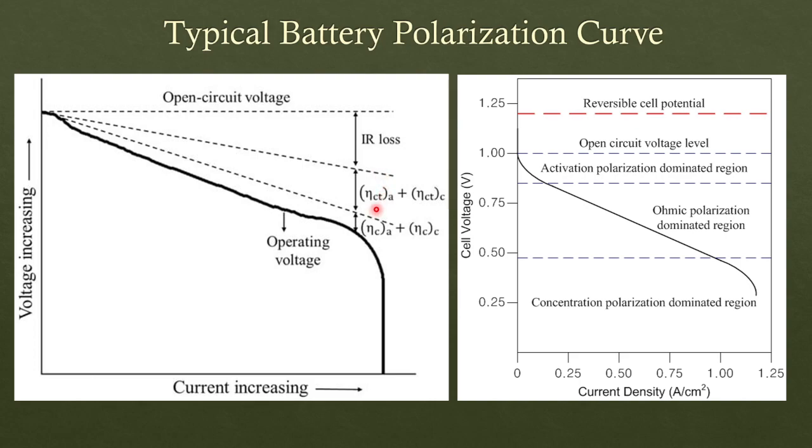Which includes activation losses or charge transfer losses for anode and cathode, and also the concentration losses of anode and cathode. So these are the three major contributors. This plot shows voltage versus current density, and you can see this flat line is open circuit voltage, and then there is drop due to these three major components.